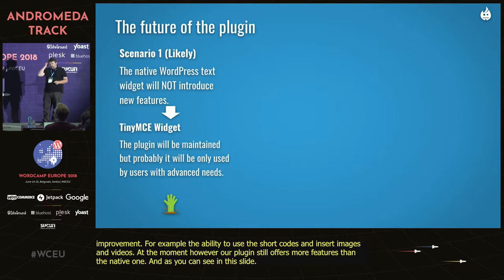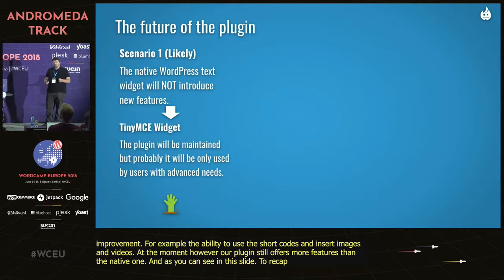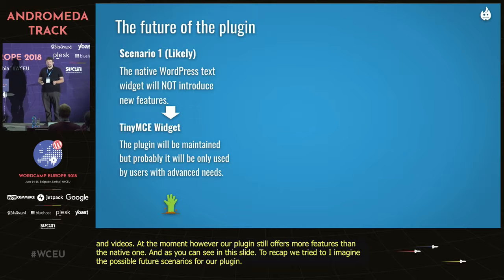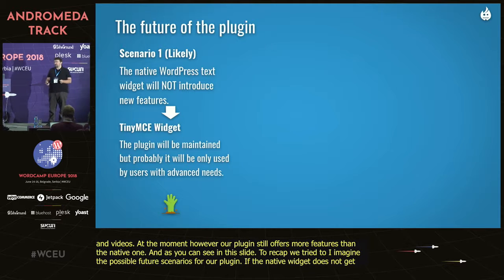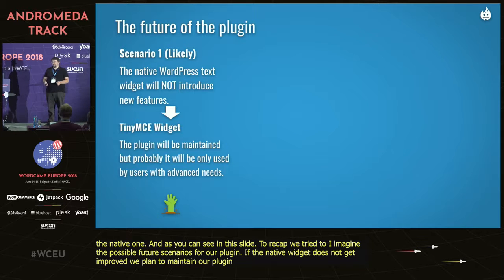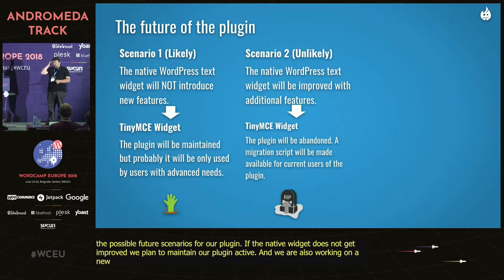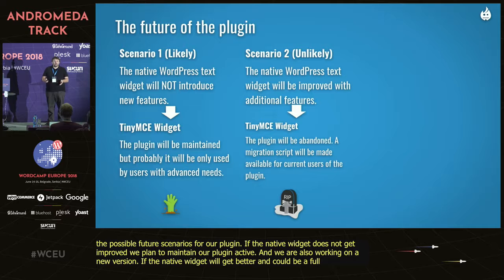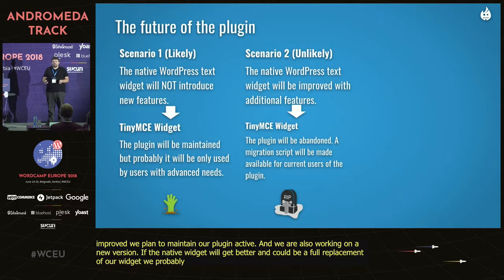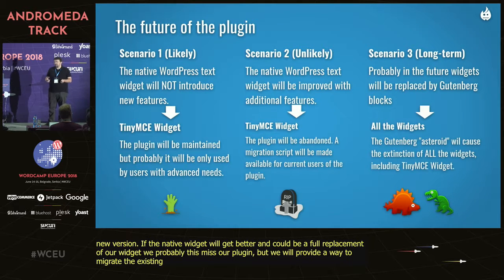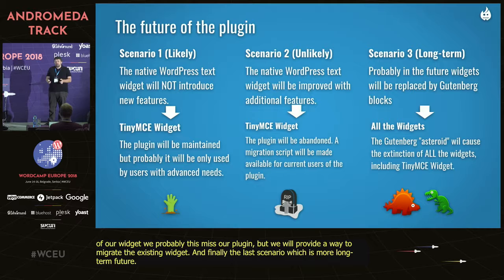To recap, we tried to imagine the possible future scenarios for our plugin. If the native widget doesn't get improved, we plan to maintain our plugin active — and we are also working on a new version. If the native widget gets better and could be a full replacement of our widget, we will probably dismiss our plugin but provide a way to migrate the existing widgets. And finally, the last scenario — more of a long-term future — is where all the widgets will be replaced by Gutenberg blocks.